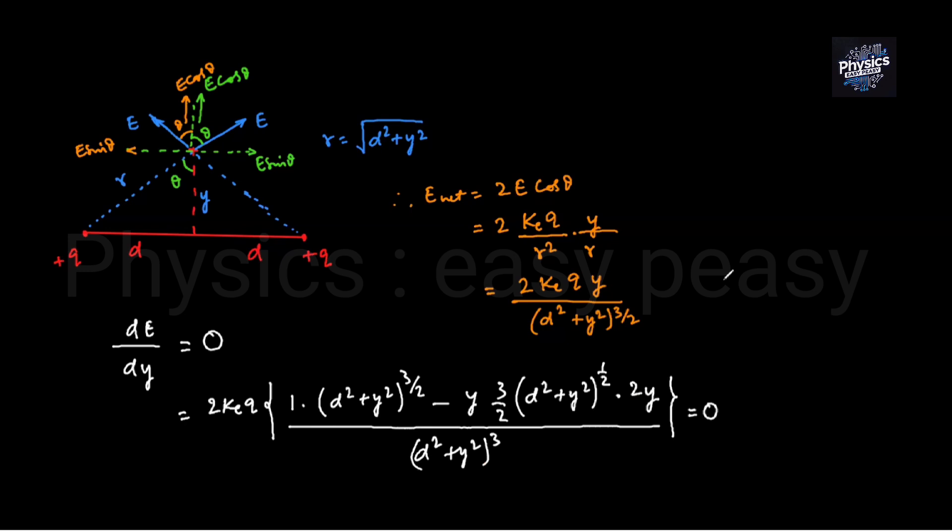This simplifies as the constant terms can be removed. The numerator becomes d squared plus y squared to the power 1/2 minus 3y squared equals zero. Solving: d squared plus y squared minus 3y squared equals zero, so 2y squared equals d squared, therefore y equals plus or minus d divided by root 2.